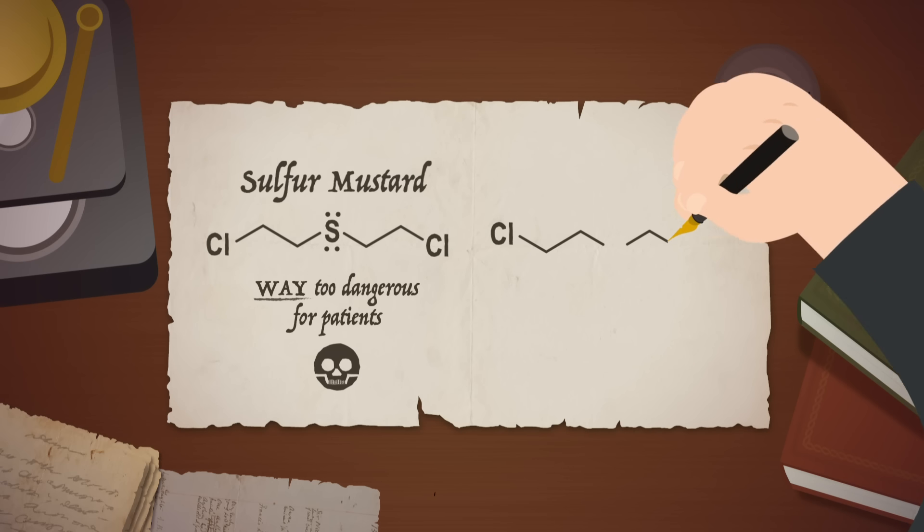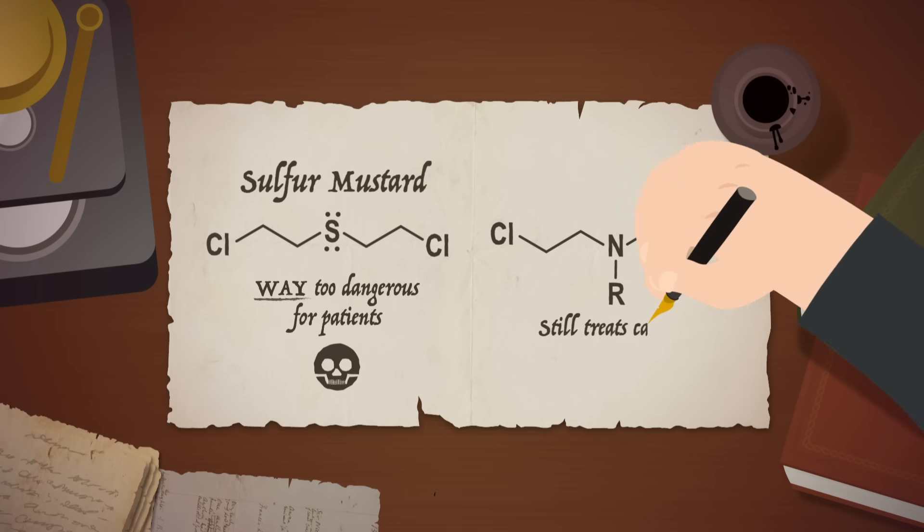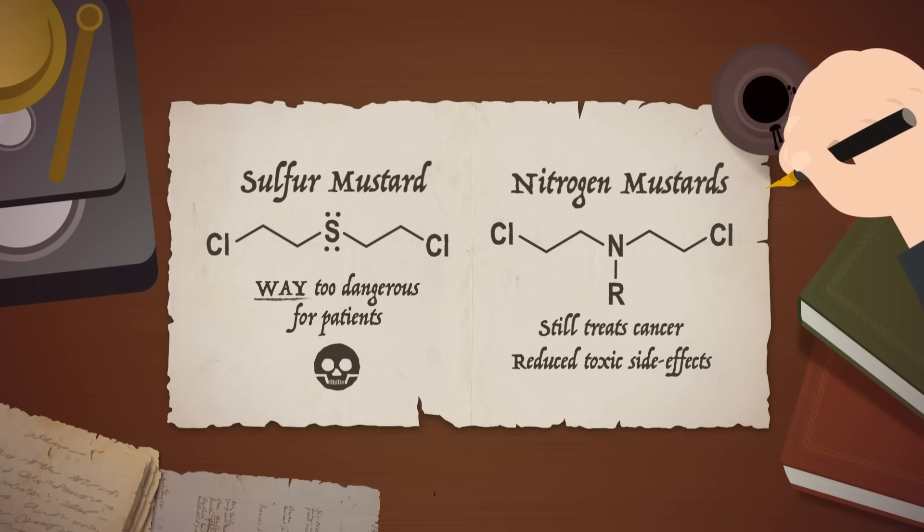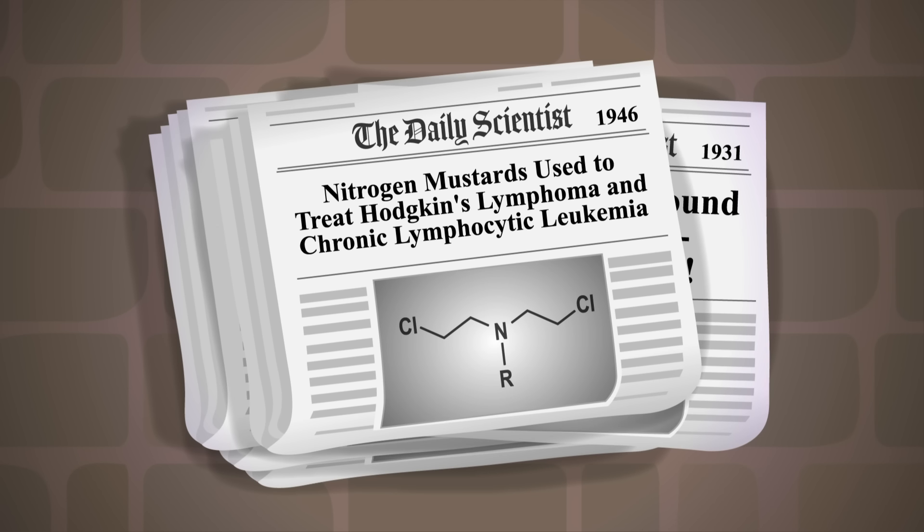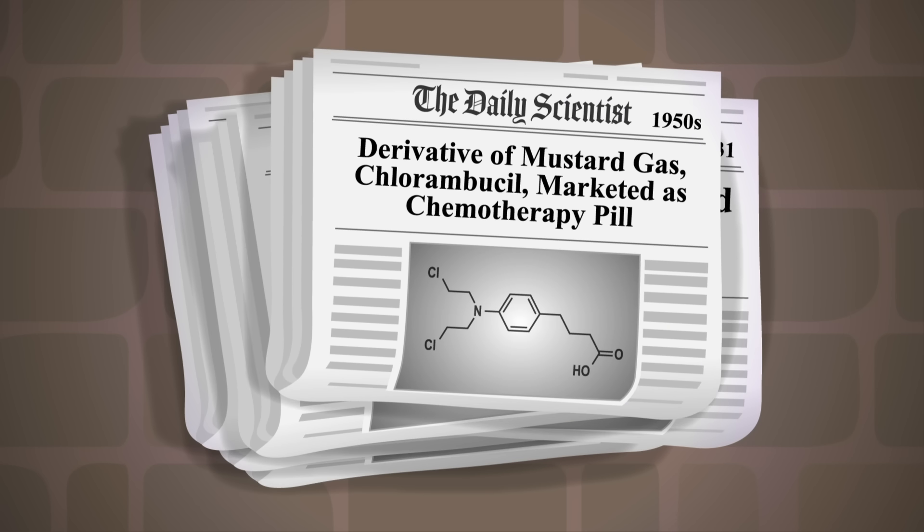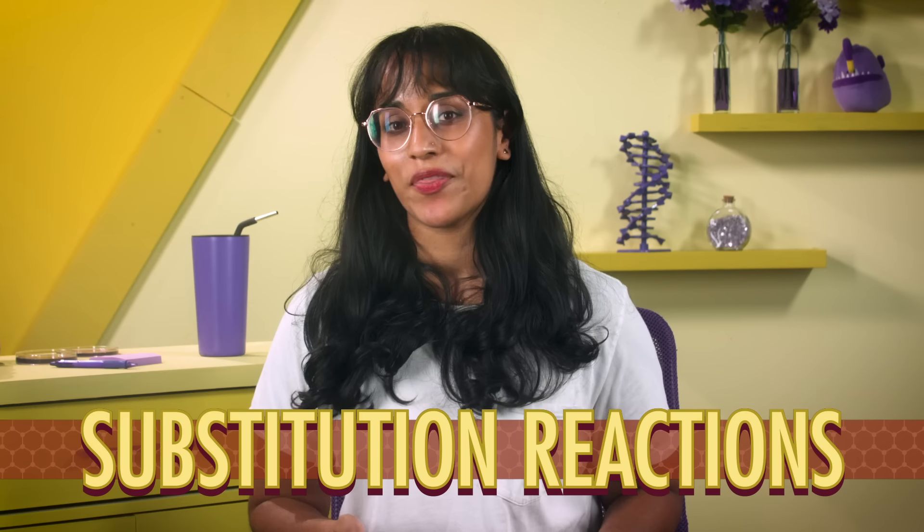Fighting fire with fire, or cancer with mustard gas, would be way too dangerous for patients, so chemists went back to their lab benches. They found that by replacing the sulfur in mustard gas with nitrogen, they were able to treat cancer and reduce some of the toxic side effects in humans. This new class of compounds were called the nitrogen mustards, and in 1946 nitrogen mustards were used to treat Hodgkin's lymphoma and chronic lymphocytic leukemia. By the 1950s, another derivative of mustard gas called chlorambucil was marketed as a chemotherapy drug patients could take by mouth. Nowadays, we understand that mustard gas and the chemotherapy drugs inspired by it cross-link DNA and keep it from replicating. Being able to stop cancer cell DNA from replicating is hugely important in chemotherapy treatments. By the end of this episode, we'll be able to see how substitution reactions make these chemotherapy agents work.